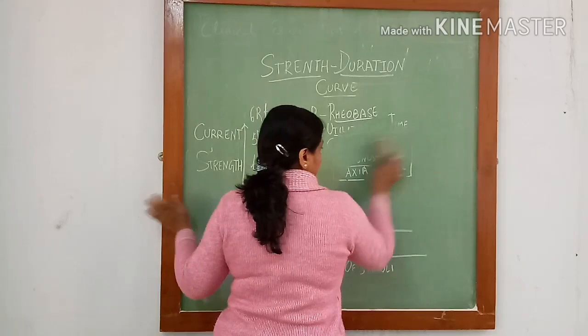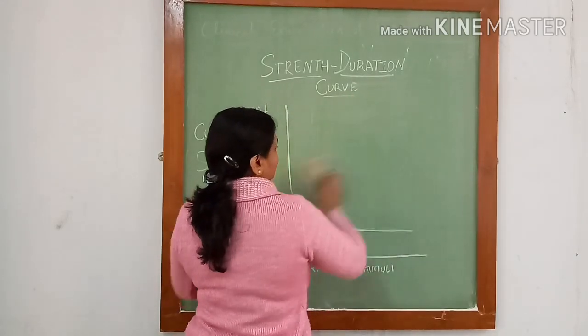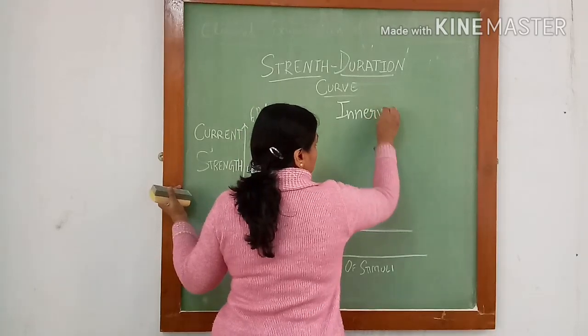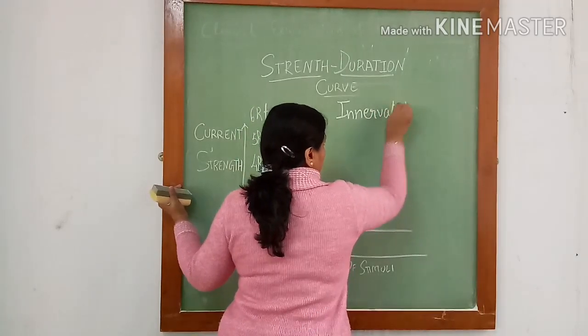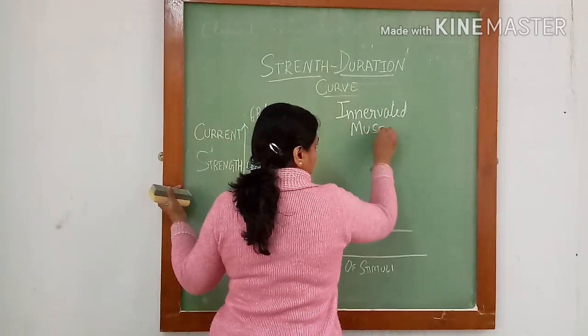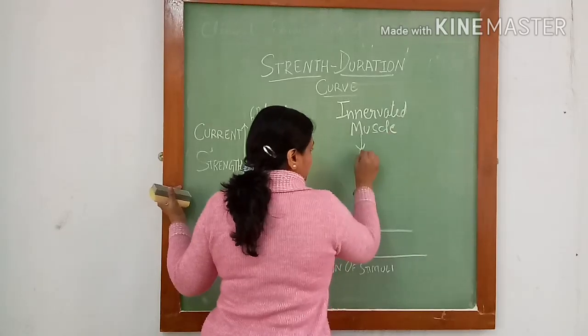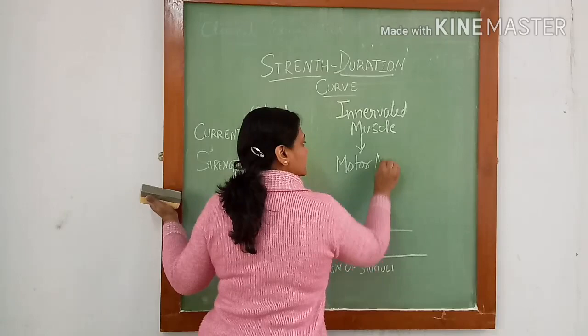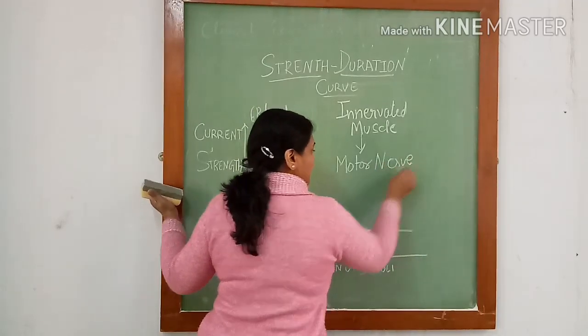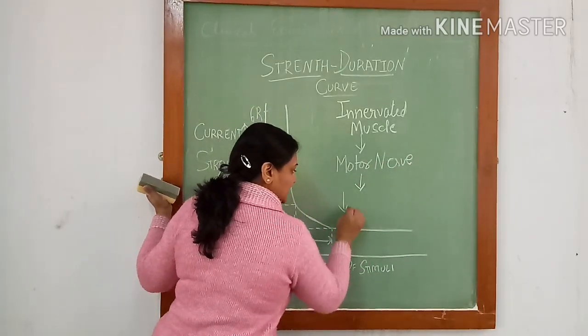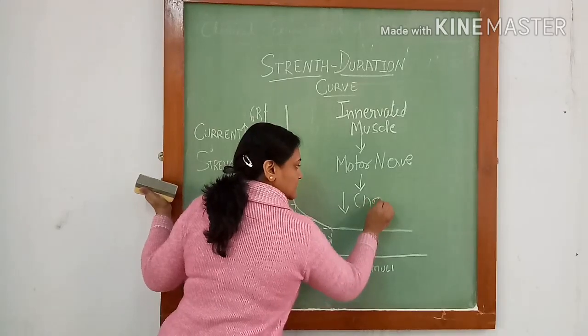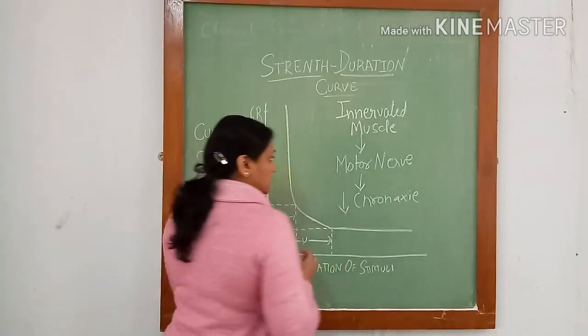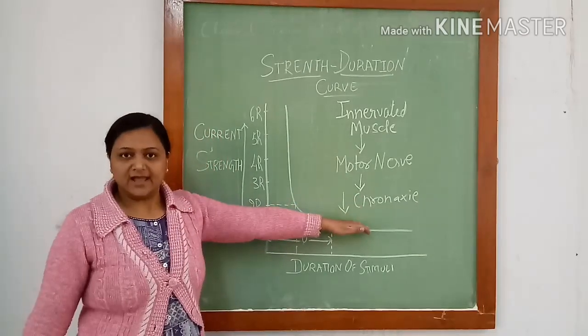In case of innervated muscle, stimulation is through motor nerve. So its chronaxie is less, so it is highly excitable.